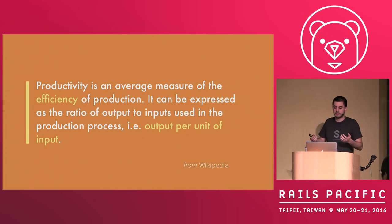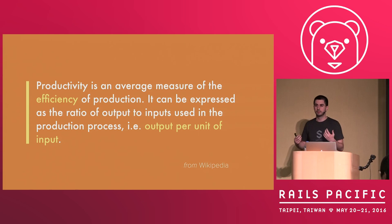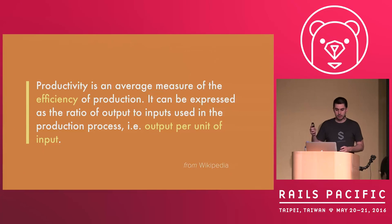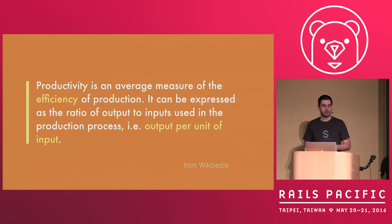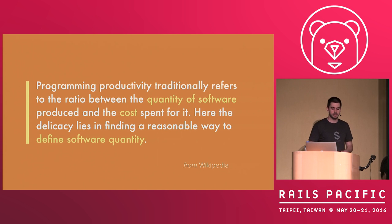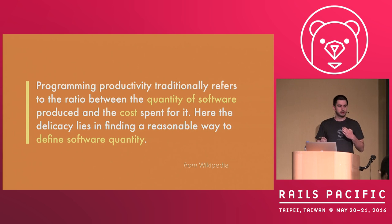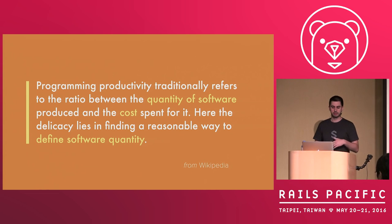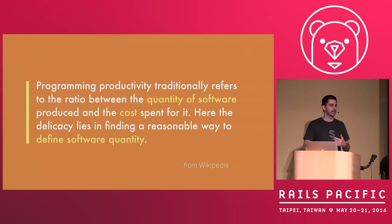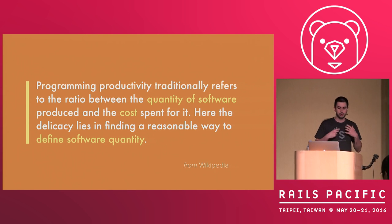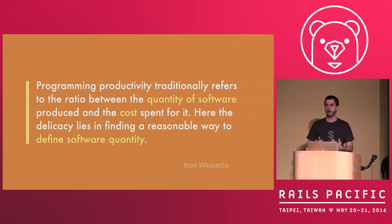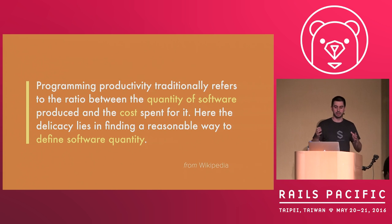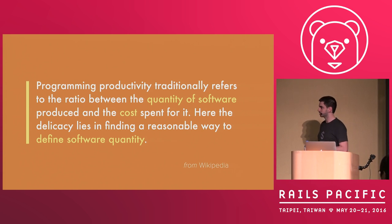I looked it up on Wikipedia, and it basically says that productivity is a measurement of efficiency — output per unit of input. But what is output? What is input? Is it lines of code? There's also the programming productivity definition, which takes quantity of software per cost of software. But again, what is quantity of software? Lines of code? Lines of tests? Lines of code without bugs? A number of features that clients are happy with? This is too hard and too philosophical a problem to discuss in 15 to 20 minutes.